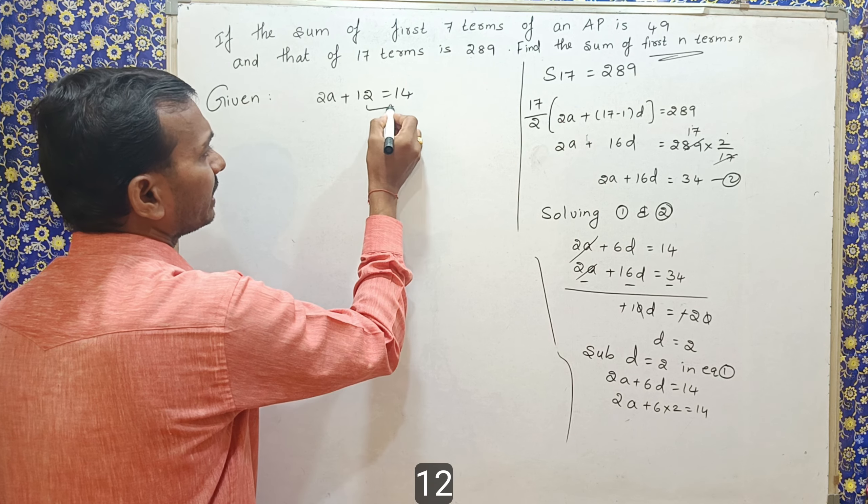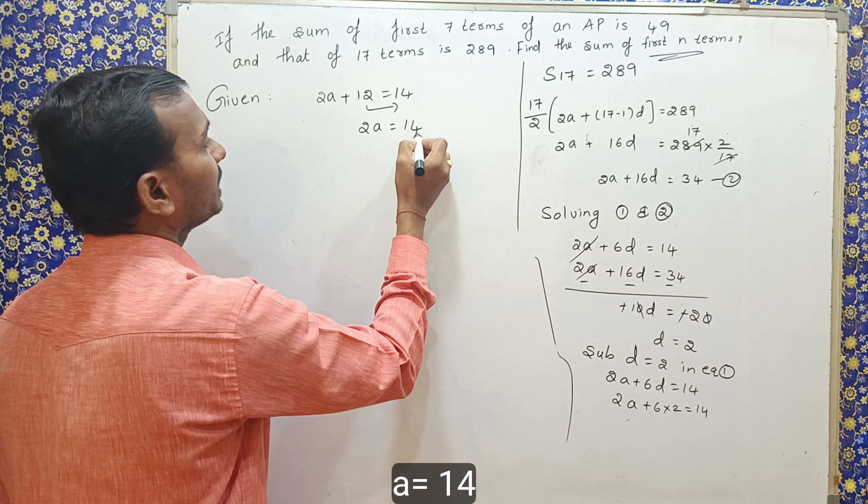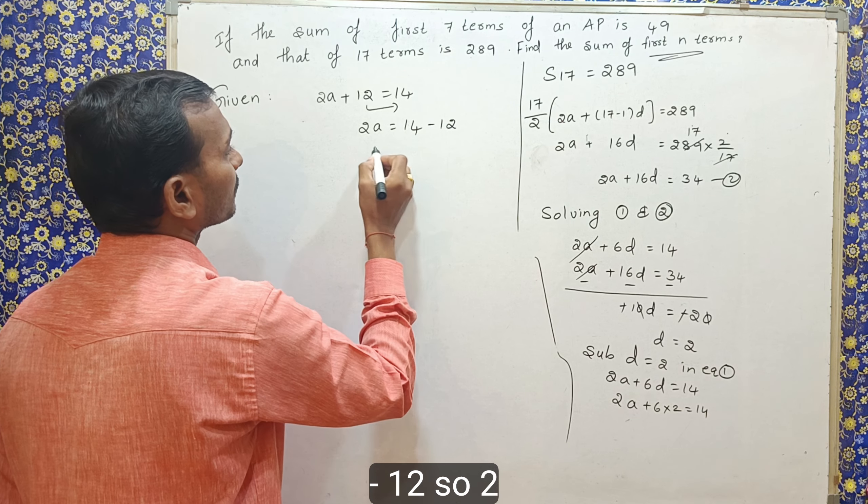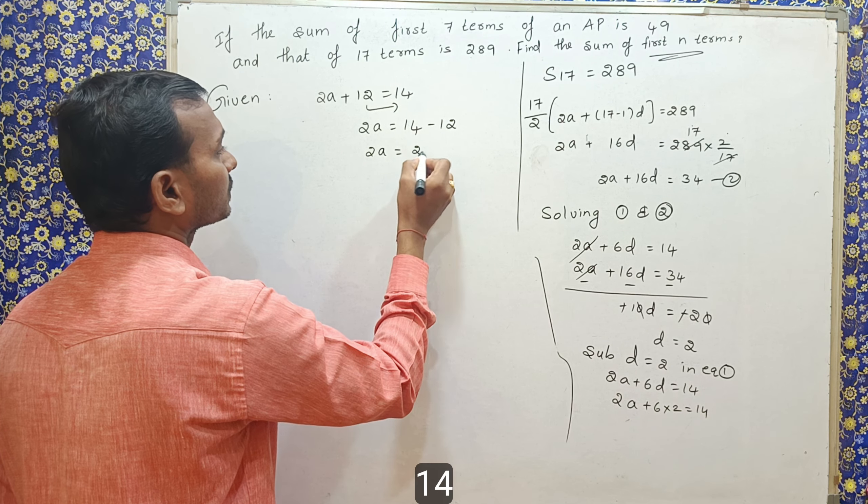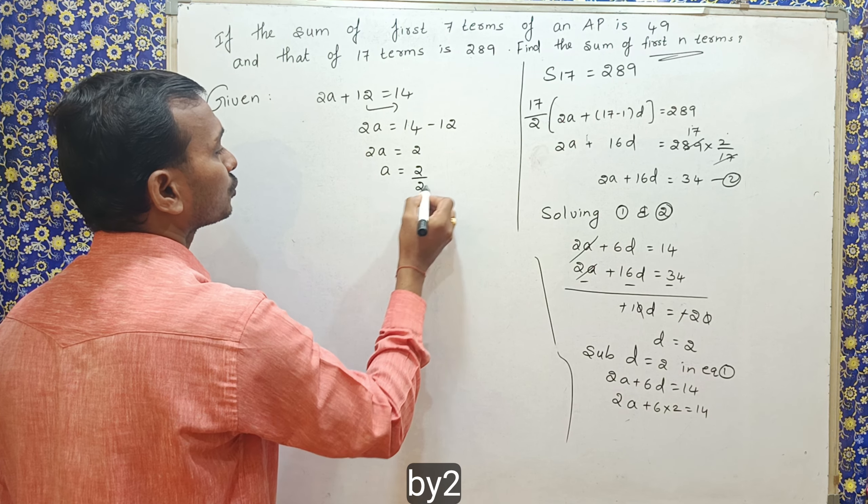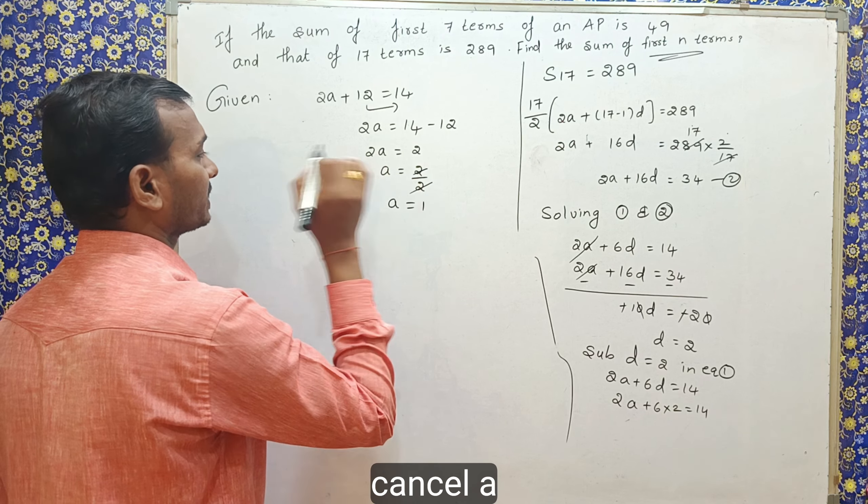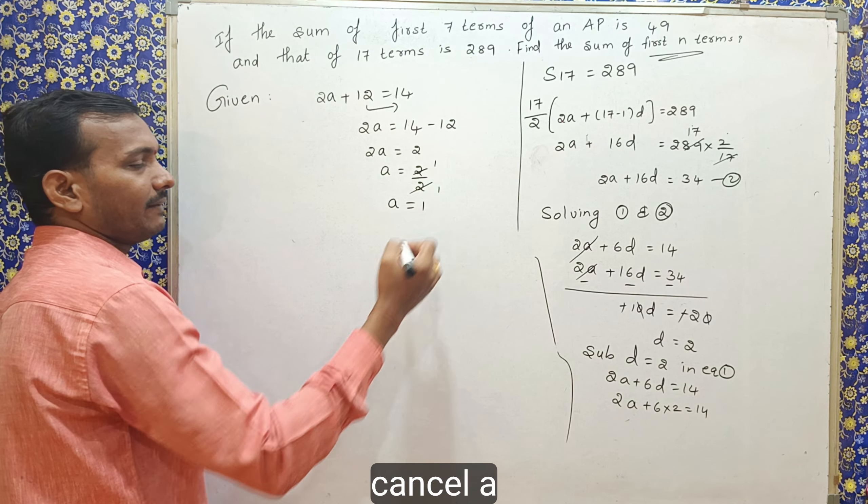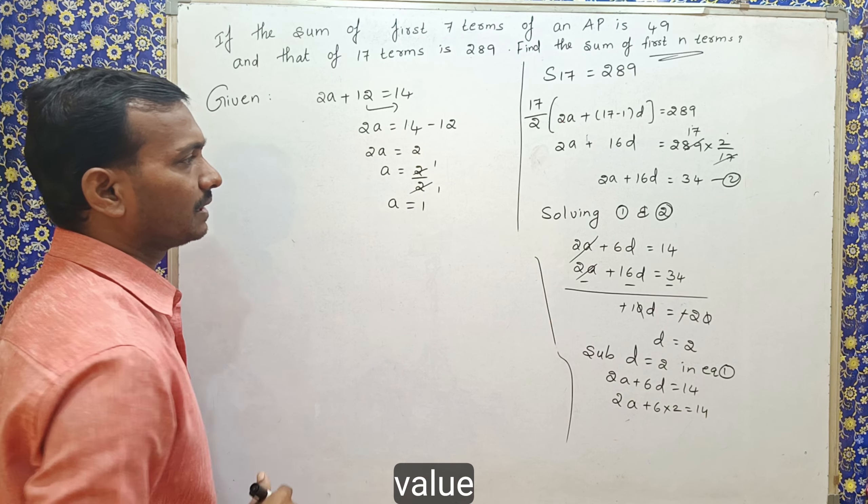So, here, 12 goes to right side. 2a is equal to 14 minus 12. So, 2a is equal to 2. So, a is equal to 2 by 2. 2 and 2 canceling gives 1. So, a value is 1.